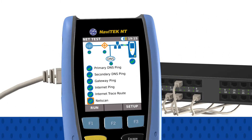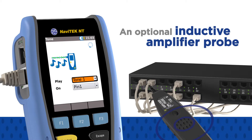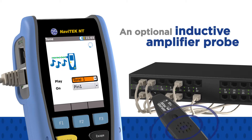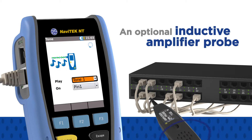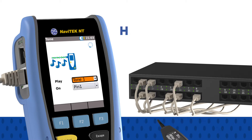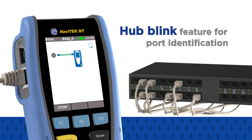An optional inductive amplifier probe will detect tones generated by any Navitec NT to facilitate cable tracing, and the hub blink feature will aid port identification.